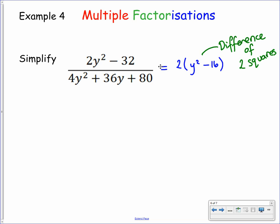On the denominator we have 4y squared plus 36y plus 80. Again there's a common factor — each of those numbers divides by 4 — so let's take out 4 as a common factor, giving us 4 bracket y squared plus 9y plus 20. Inside that bracket we actually have a trinomial. So both the numerator and denominator need to be factorized again.